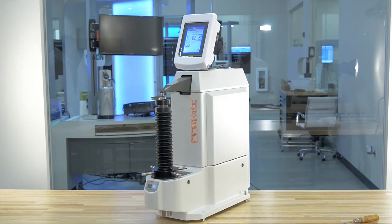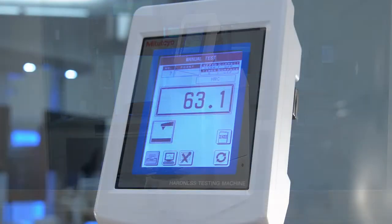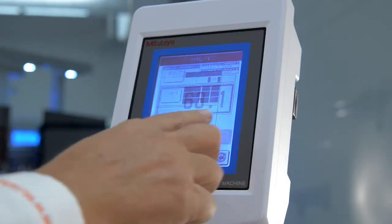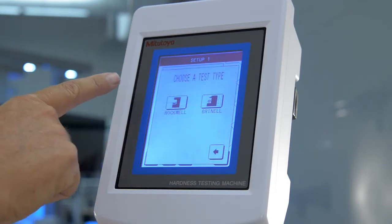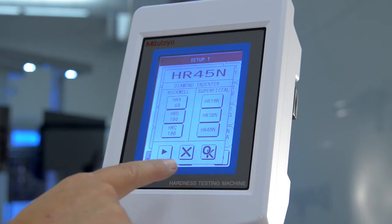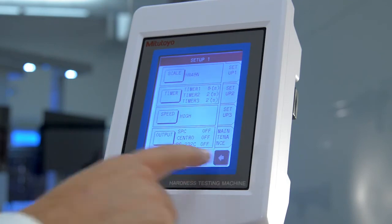The closed loop loading design does all the work of changing the scale for the operator except change the indenter. Simply select the scale from the menu and all scales are selected based on the indenter type so changing from HR-C to HR-45N is on the same screen. A power elevating screw model is also available but the ease of use of HR-521 makes it the most popular model we offer.